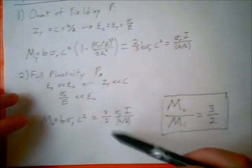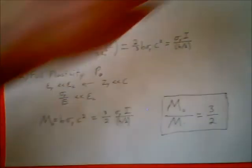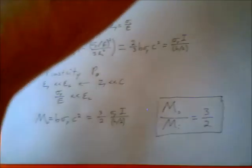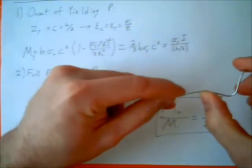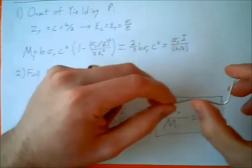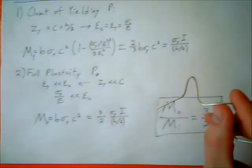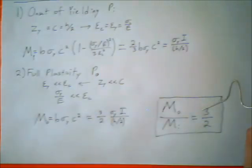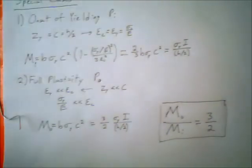So to summarize: plasticity in beams starts when M = σ_y · I / (h/2); a full plastic hinge forms when M_0 = (3/2) times that value. This is for an elastic-perfectly plastic beam — a simplification, but it works well enough. Written notes will be posted once I can get to a scanner, hopefully Wednesday.